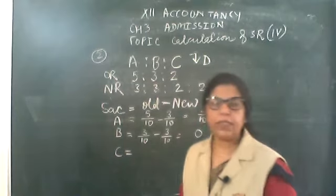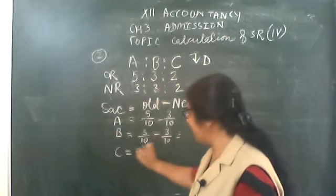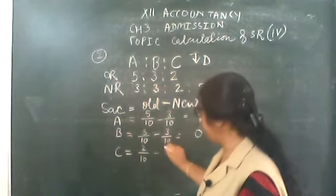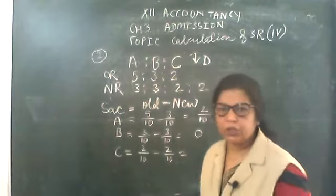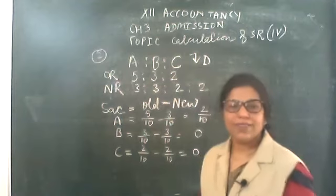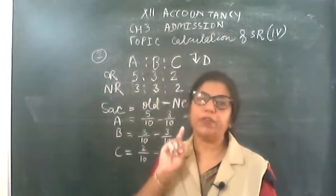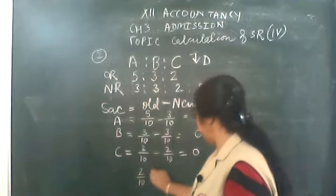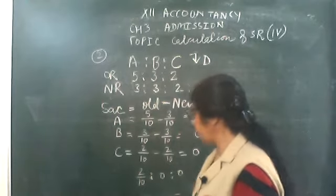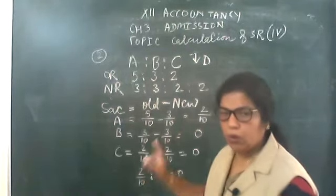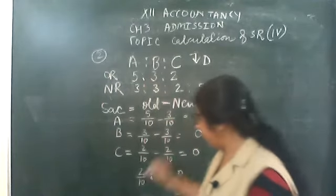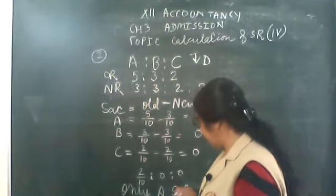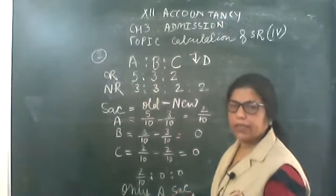B is not sacrificing. Now C — what is C's old ratio? It is 2/10. What is C's new ratio? Also 2/10. So 2 minus 2 equals 0. A, B, C are old partners, and we calculate sacrifice of old partners only. So the answer is: only A sacrifices. Others partners are not sacrificing.